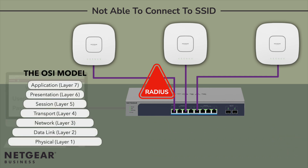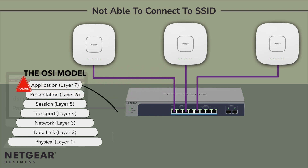RADIUS is a networking protocol which runs in the application layer and is used to authenticate user details. If WPA Enterprise is used, it's a good idea to obtain the logs from the client, the RADIUS server itself, and the access point to help identify where the broken link in the communication channel lies. WPA Personal or PSK is simpler, and you're most likely to find the fault in an incorrect password or VLAN configuration setting.